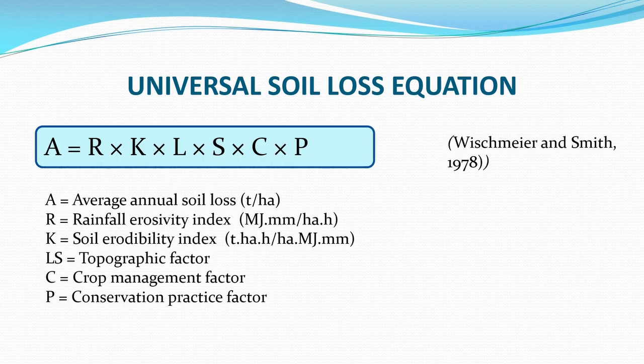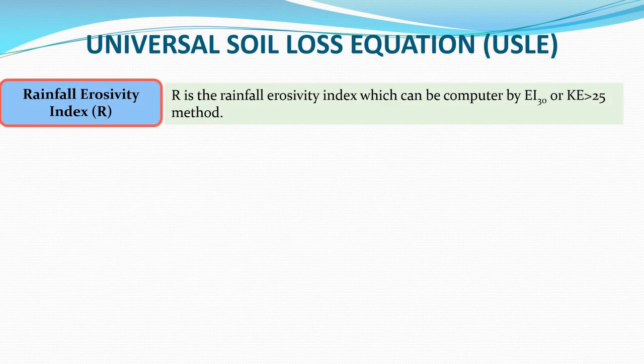R is the Rainfall Erosivity Index. It can be computed by the EI₃₀ method or the KE > 25 method. E stands for energy and I₃₀ stands for the 30-minute maximum intensity. In a rainfall event, we have to find those 30 minutes in which the intensity was maximum.